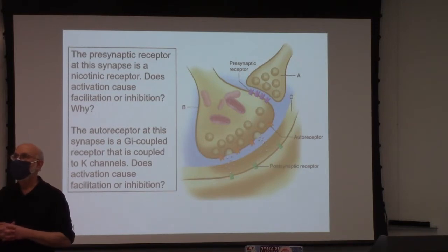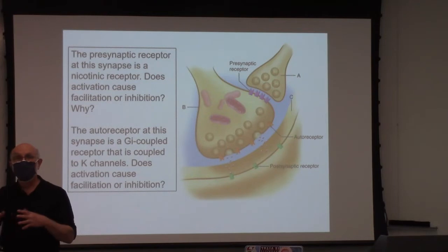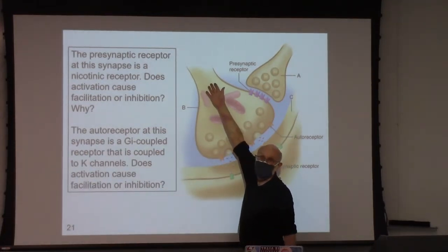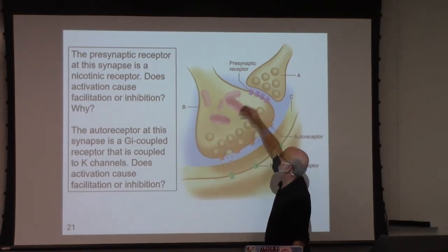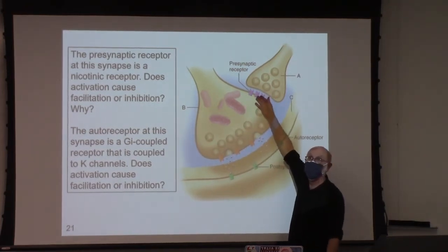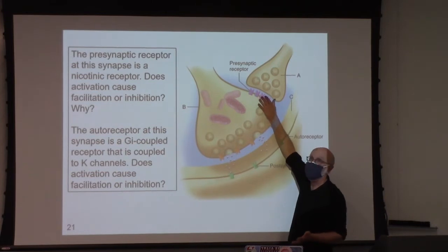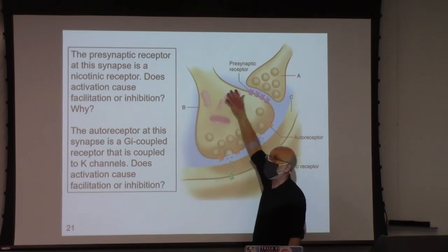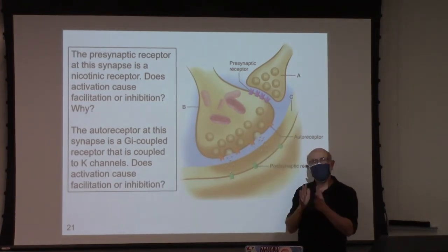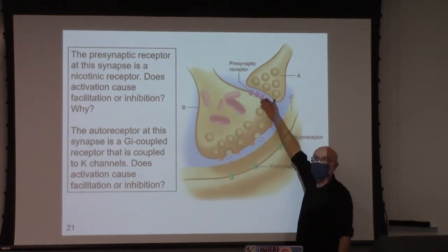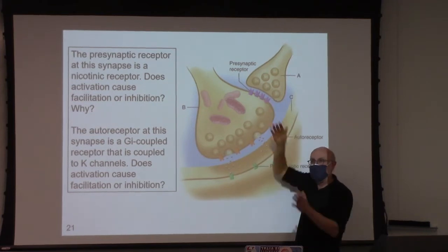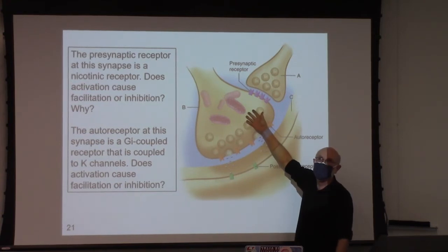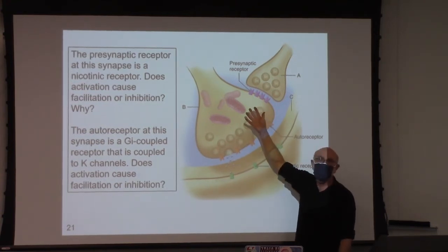Depolarization opens channels at the terminal. So now we have two routes of depolarization: we've got the action potential depolarizing this terminal, and we have the nicotinic receptor — a chemical signal causing more depolarization. The action potential is big but very brief, and the depolarization here is small but very long-lasting compared to an action potential duration — and they are summing. Spatial and temporal summation, right here.